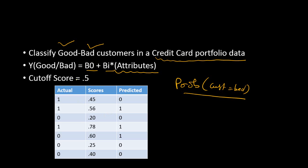Once we have the scores, we use a cutoff value and then we find out what is known as the predicted value of the target variable. In this case, if a customer is bad we give them one, else zero. The corresponding probability score is computed, and then we use a cutoff value — normally 0.5, though it can be anything. If the score is greater than 0.5, we assign it as one, else zero.